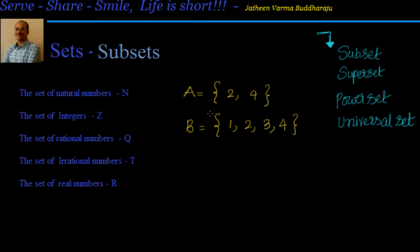Now if you compare sets A and B, you can see that each element of A is already present in B. That means if I take element 2, the first element of A, you can see that 2 is already present in B. Similarly if you look for 4, 4 is also present in B.